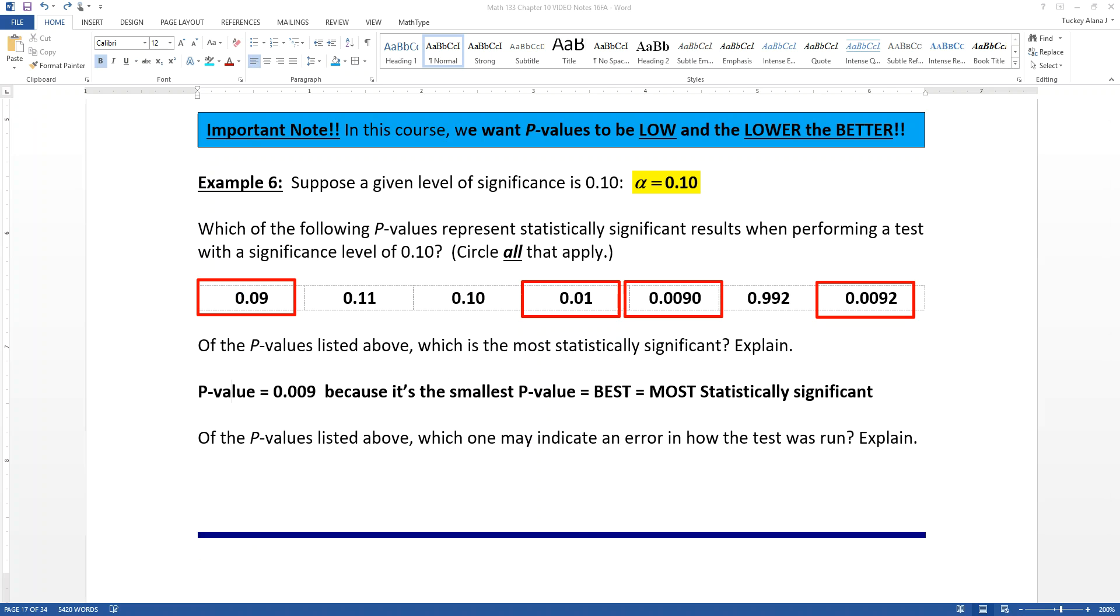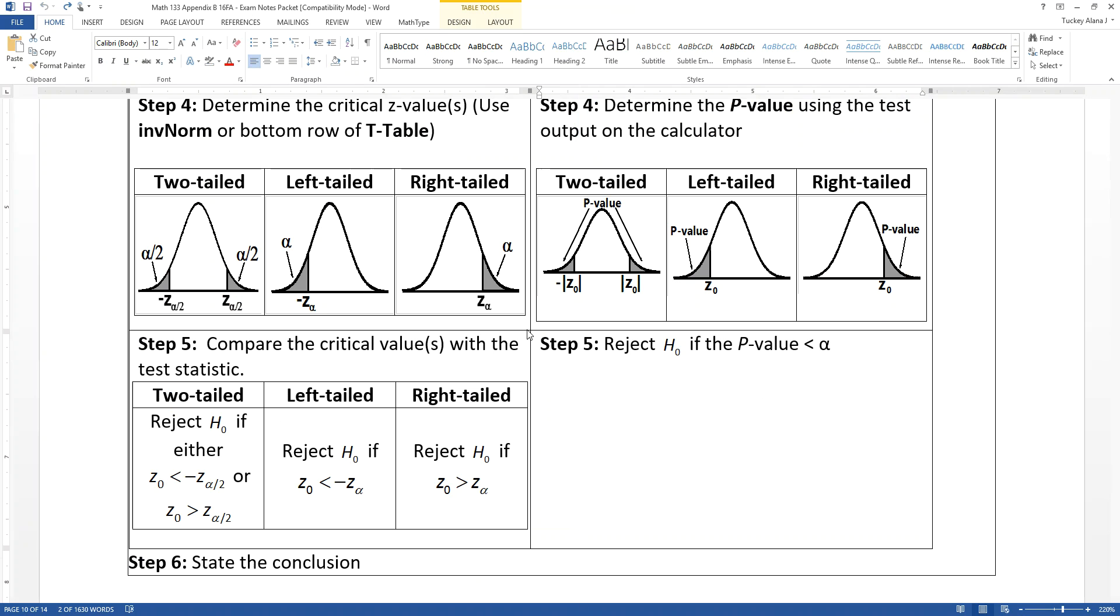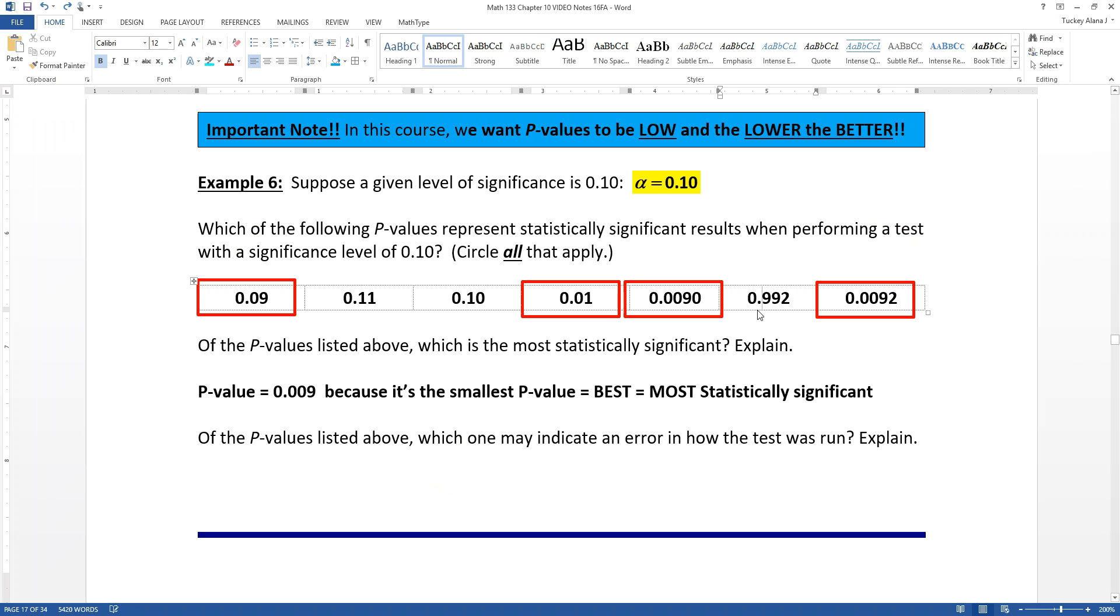We're talking about the area over in the tails for a test. So these small areas. Now, notice they're all pretty small. They're all generally less than 10%, 15%, 20% of the curve. We have most of the curve left unshaded. And the one that might be a little bit concerning is 0.992. That one.